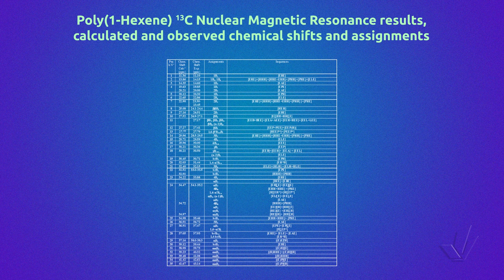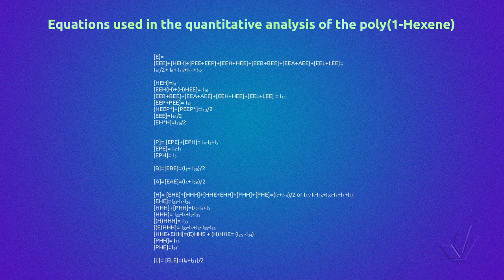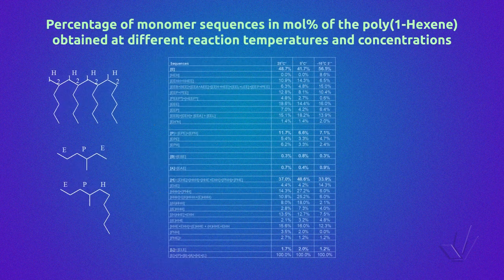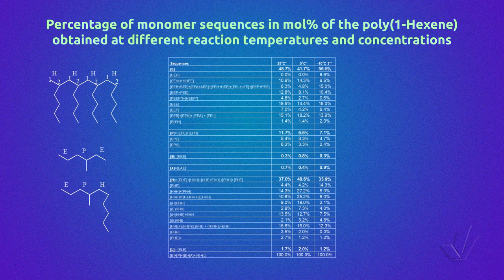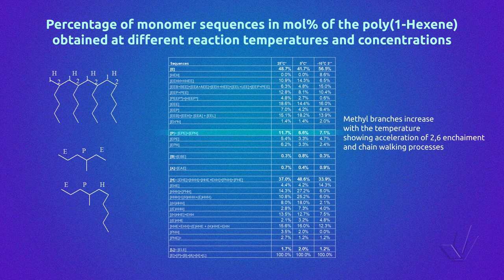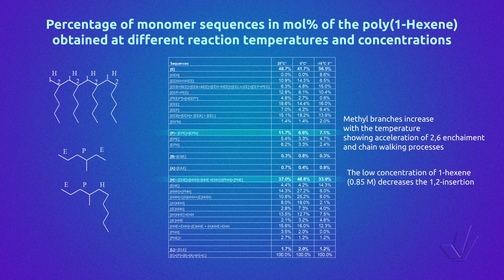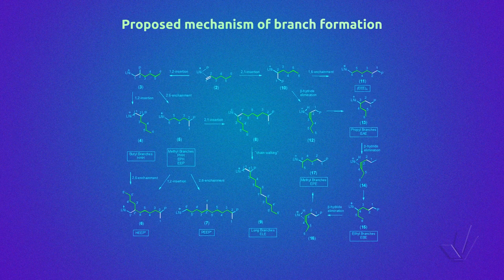In this table, it can be seen all the peaks, the calculated and experimental chemical shifts, the carbon atoms, and the different sequences. Here are the equations used to determine all the sequences, and finally the results of this analysis. This type of work lets us have an idea of the mechanism of the polymerization and the influence of temperature and monomer concentration on the distribution of sequences. For example, it can be said that methyl branches increase with temperature, showing acceleration of 2-6 enchainment and chain-walking processes. Another conclusion is that low concentration of 1-hexene, for example 0.85 molar, decreases the 1-2 insertion — that is, the one giving consecutive hexene sequences. With the knowledge of all the sequences present, it is possible to propose a mechanism of this type.